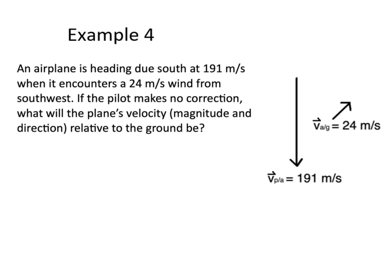An airplane is heading due south at 191 meters per second when it encounters a 24 meter per second wind from the southwest. The wind is going toward the northeast at a 45-degree angle. The question says: if the pilot makes no correction, what will the plane's velocity be relative to the ground? The velocity of the plane relative to the air is 191 m/s, and the velocity of the air relative to the ground is 24 m/s.